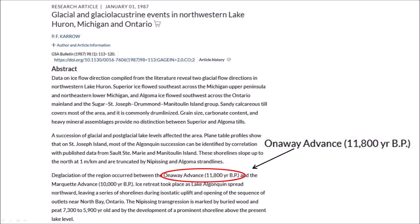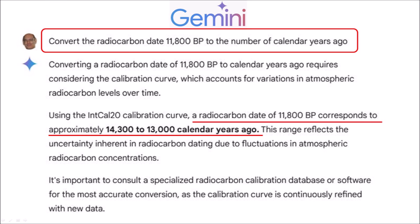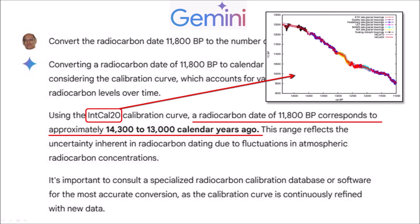The extraterrestrial impact is thought to have occurred during the Onaway Advance at 11,800 years before the present — a non-calibrated radiocarbon date. I asked Gemini, the Google Artificial Intelligence Assistant, to convert the radiocarbon date 11,800 BP to the number of calendar years ago. The response was: converting a radiocarbon date of 11,800 BP to calendar years requires the calibration curve. Using the IntCal20 calibration curve, 11,800 BP corresponds to approximately 14,300 to 13,000 calendar years ago. This range reflects uncertainty due to fluctuations in atmospheric radiocarbon concentrations, and the calibration curve is continuously refined with new data.